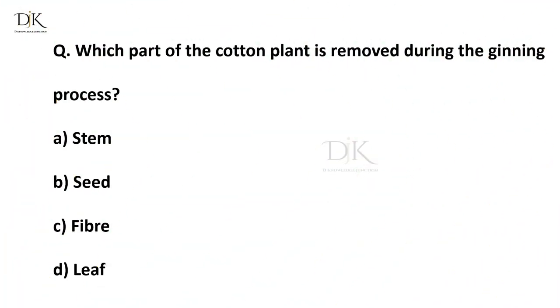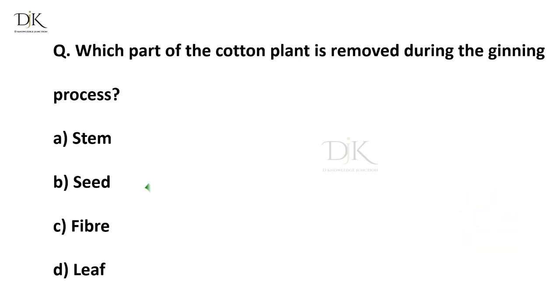Which part of the cotton plant is removed during the ginning process? Right answer is seed.